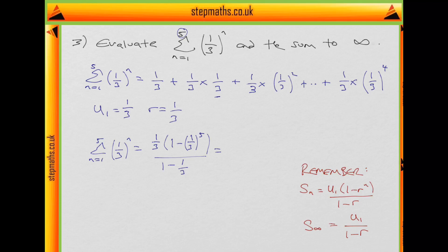So let's simplify this. Well, the 1 third, 1 minus 1 third gives you 2 thirds at the bottom. So we have 1 third over 2 thirds, which will give you 1 half. And now we have 1 minus, well 1 to the power of 5 is 1.